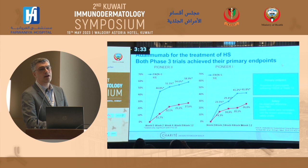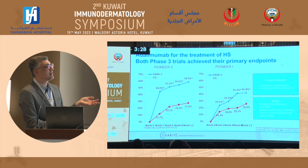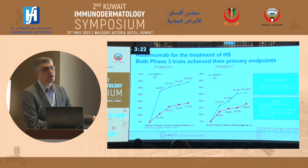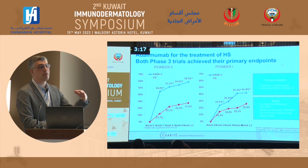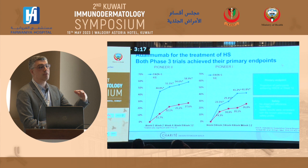Adalimumab is the only drug approved so far for HS — the PIONEER trials. What we achieved is that half of the patients achieved a 50% improvement of the skin condition. It's good that we have it, but you cannot compare it with other diseases like psoriasis. Now we do have a new drug — this is the Cosendix for HS, which is not yet approved.